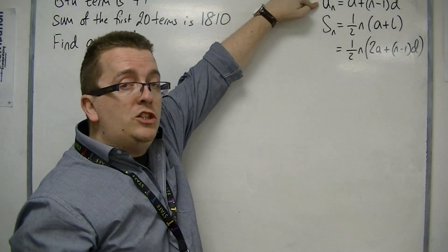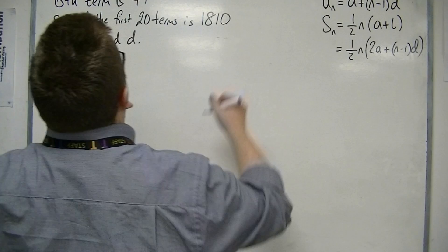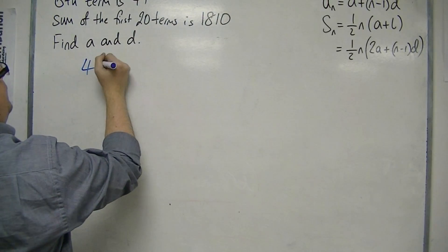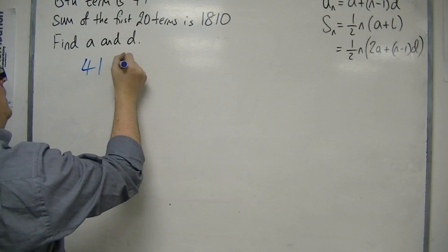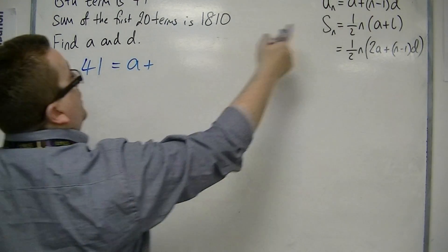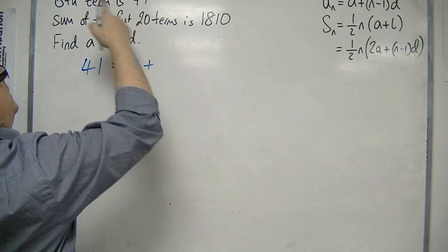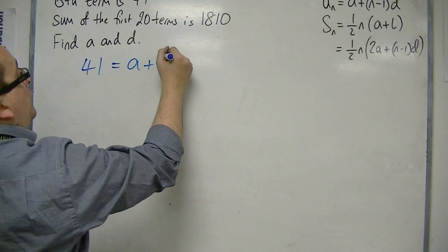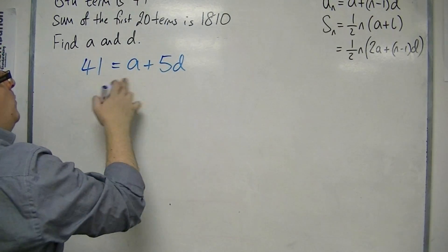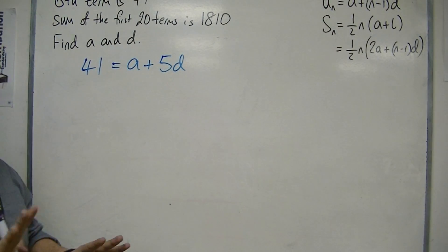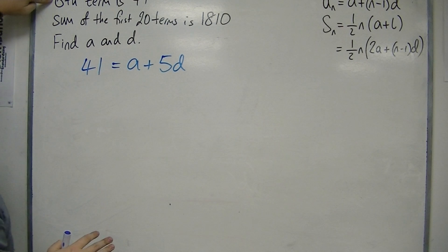So the sixth term is 41, so we're going to use that top formula. So that can tell us that the sixth term, 41, is A plus N minus 1D. Well, 6 minus 1 is 5. So 41 is A plus 5D. And that comes from that sentence there, that first bit of information.